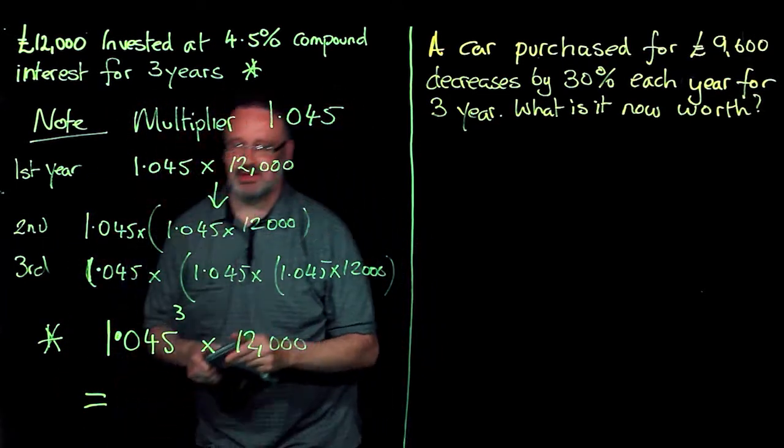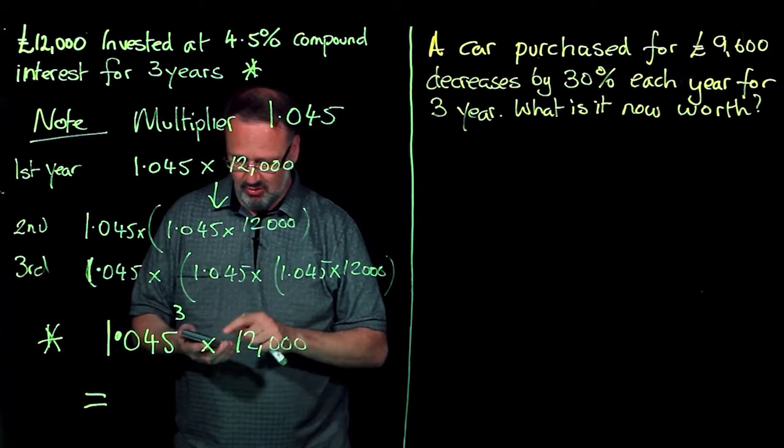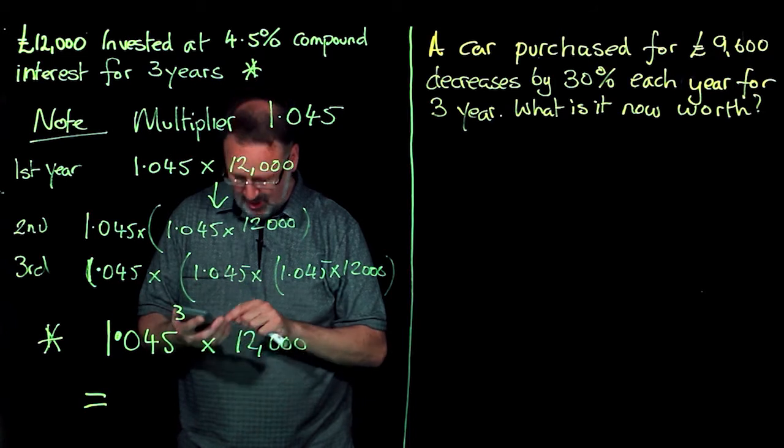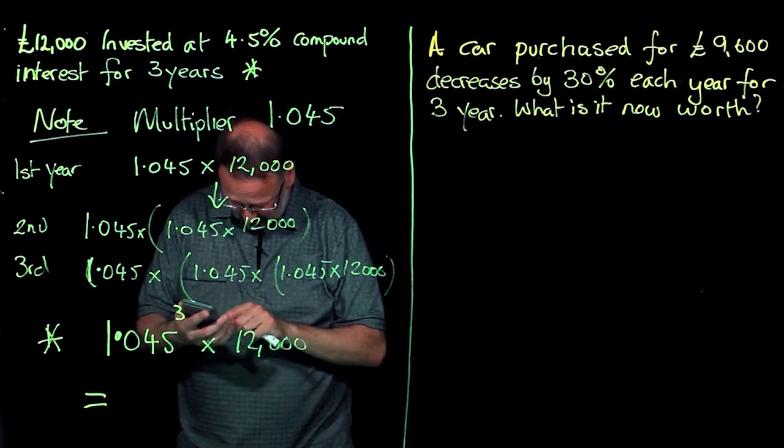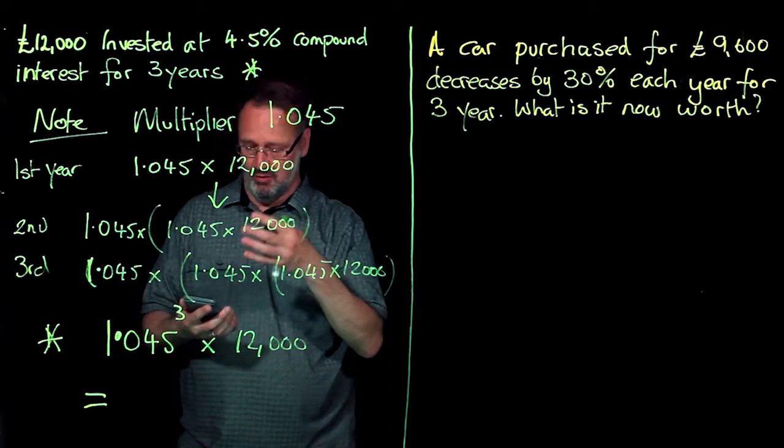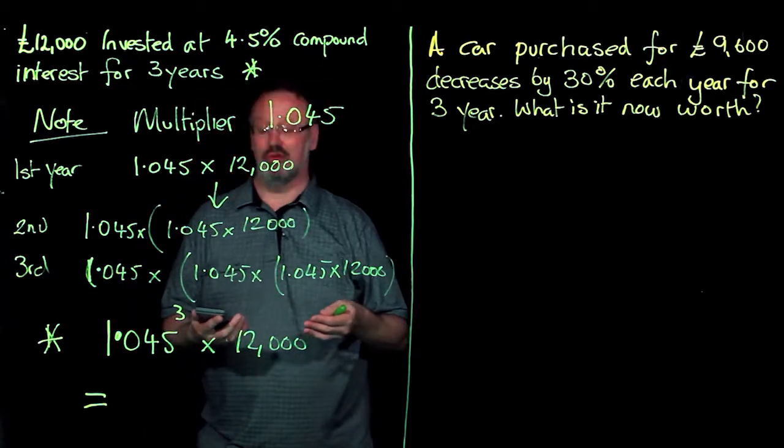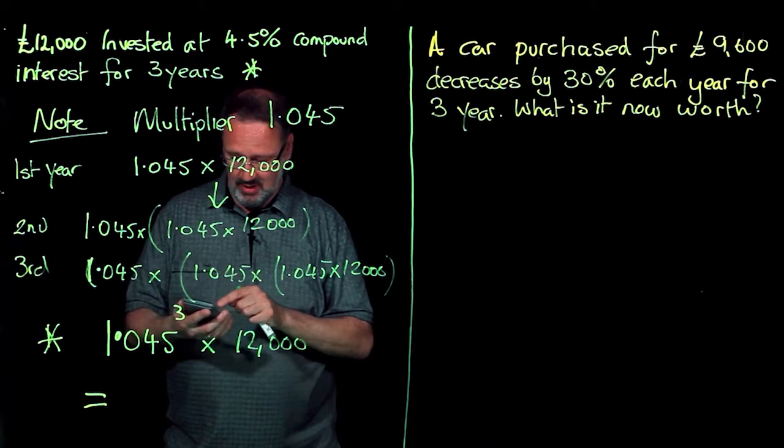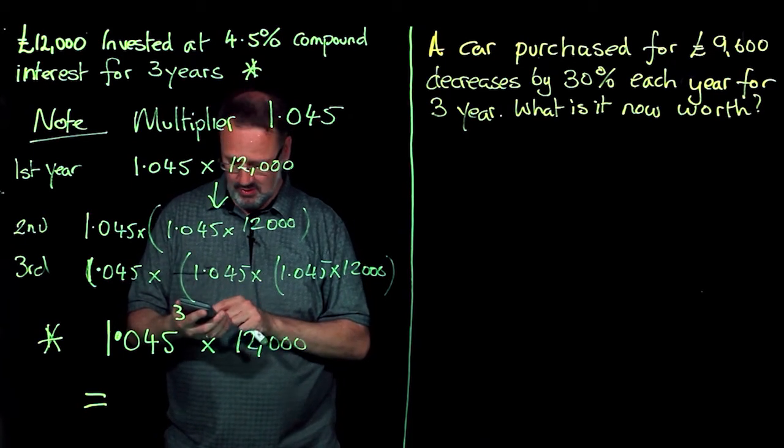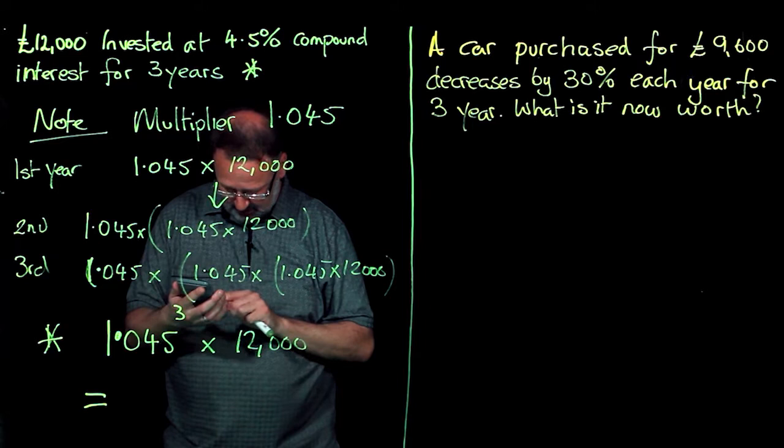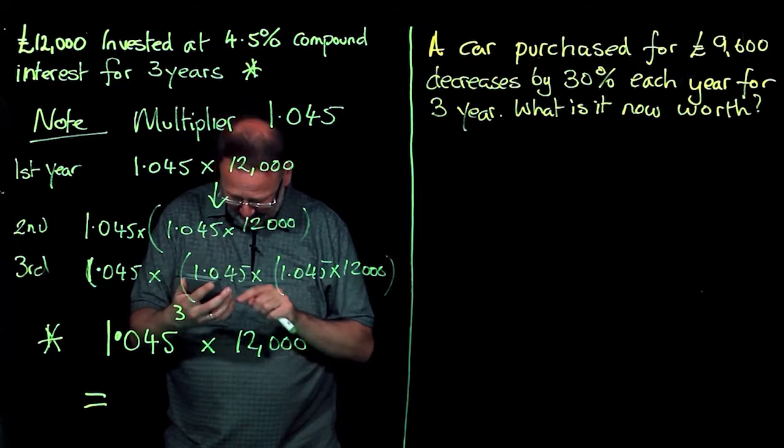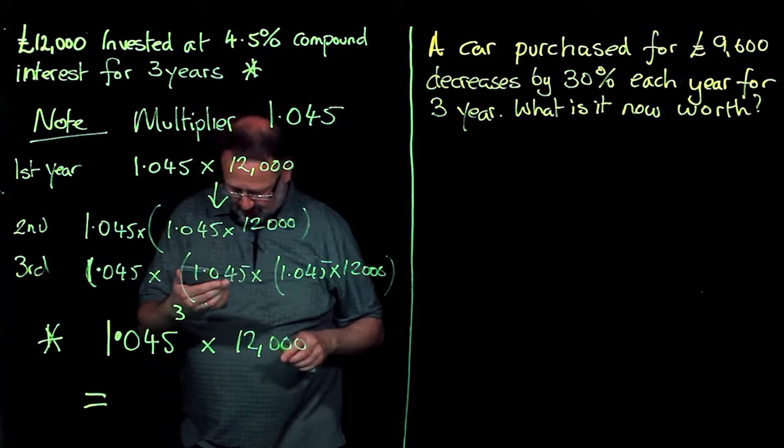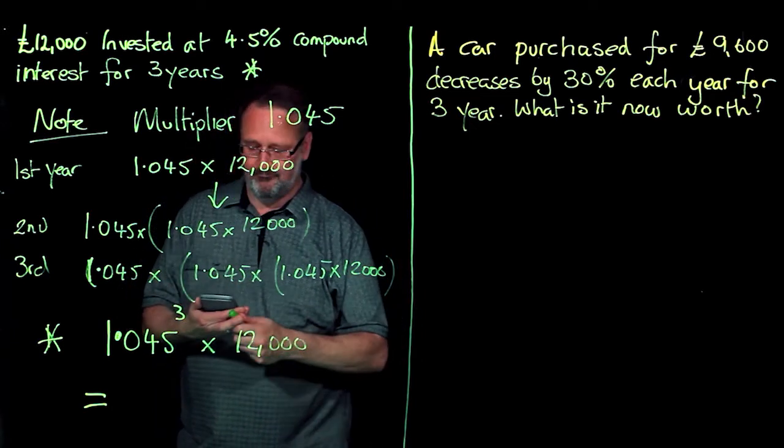Now, calculator time. On my calculator, I have 1.045 to the power of 3. And I have a little up arrow button, rather similar to what you might get on your computer at home. So I will go to the power of 3 times 12,000. I'm just being very careful how I put it in. And I get the answer 13,693.9935.